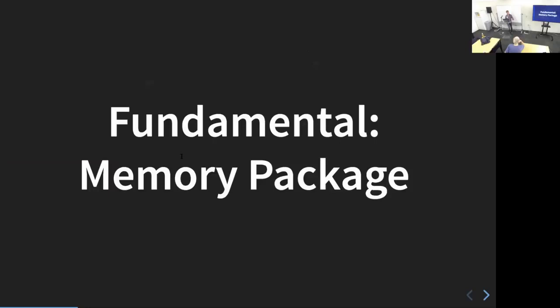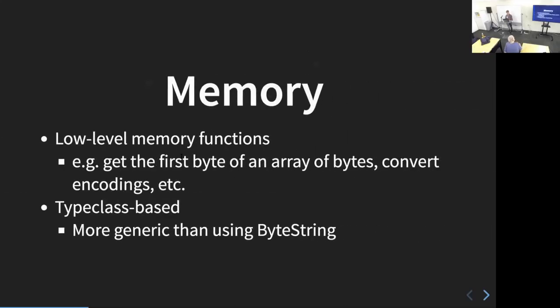These type classes are not actually from the Kryptonite package — they're from the memory package, which Kryptonite uses pretty extensively. The memory package provides low-level memory functions: for example, getting the first byte from an array or converting between encodings for binary data. It's also type class based, so instead of your library taking just a byte string, you can take a byte string, a newtype of a byte string, or custom data that implements the functions memory needs to get the data out at the byte level.